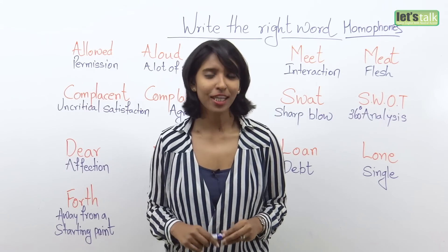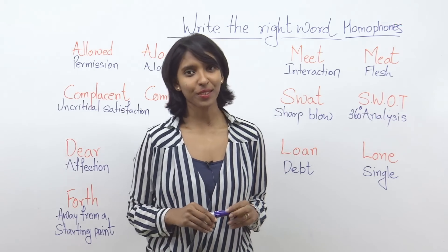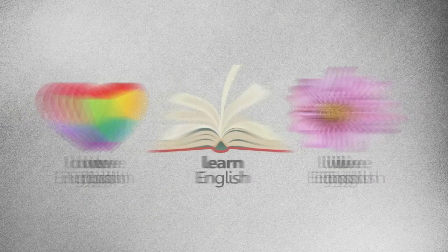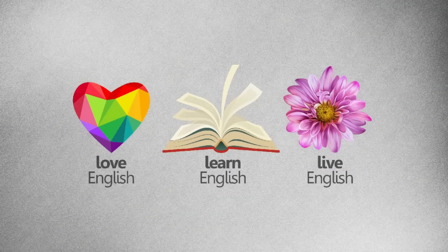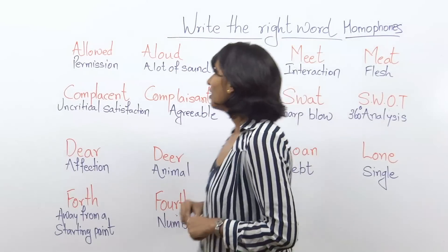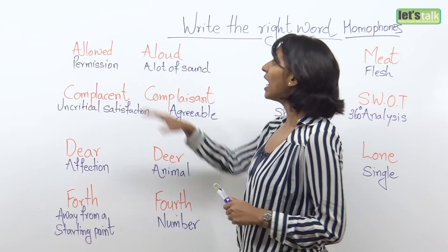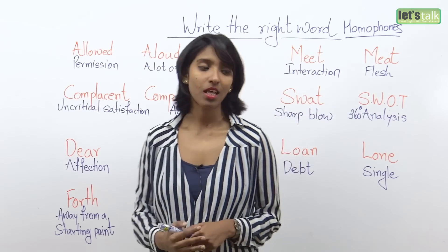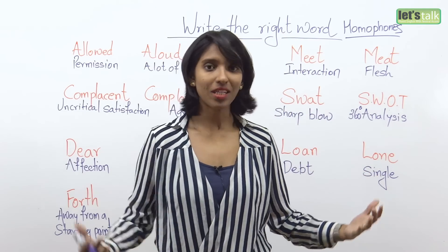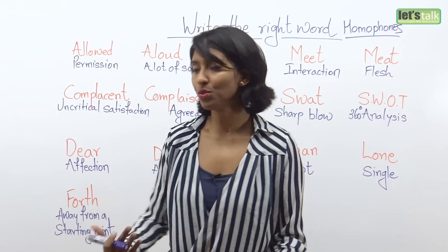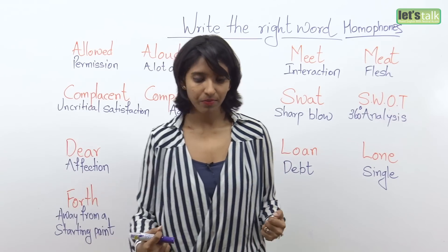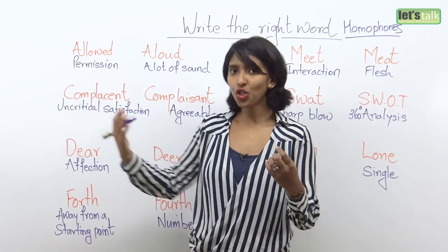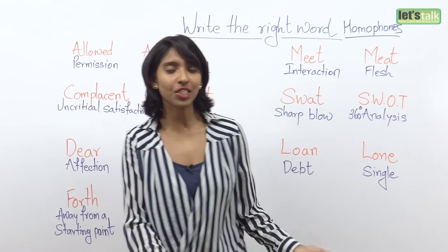So let's take a look at a few examples. The first one is 'allowed.' Allowed means a permission — that means something or someone is allowed. This is how you will use it: maybe John is allowed in the office, because John has the permission to enter the office.